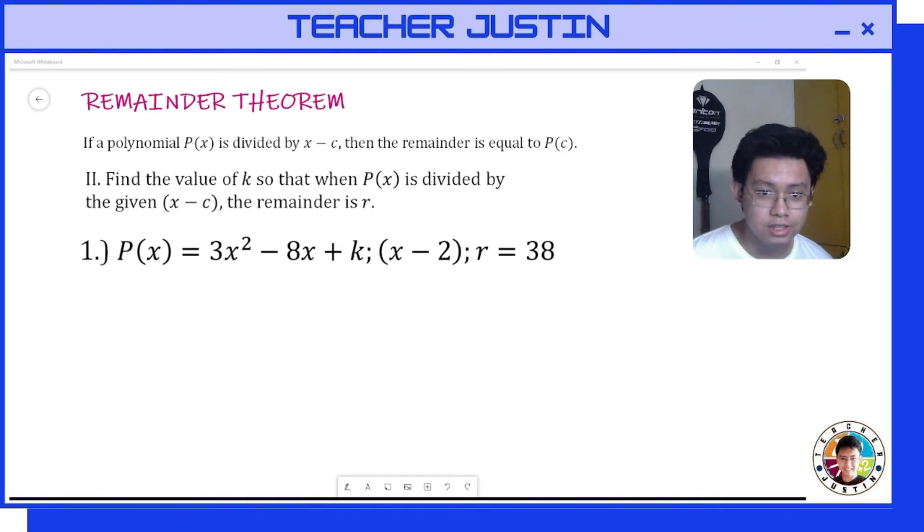Let's have our first example. We have P(x) = 3x² - 8x + k, divided by the binomial x - 2, with a remainder of 38. Remember that the Remainder Theorem states that if a polynomial P(x) is divided by x - c, then the remainder is equal to P(c).